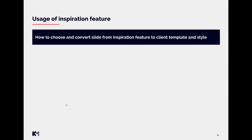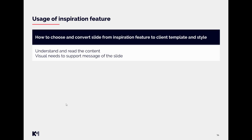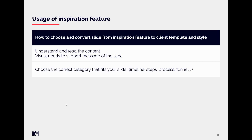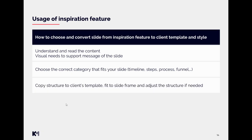When choosing a structure and converting it to the client's template and style, consider the following. First, you need to really understand and read the content of the input, because visuals need to support the message of the slide. Once you understand what the slide is about, you can choose the correct category that fits — such as timeline, steps, process, or similar. Then you can copy the structure to the client's template.